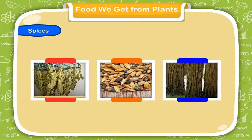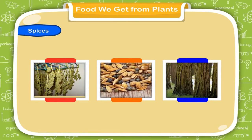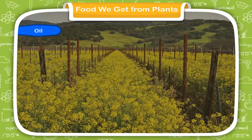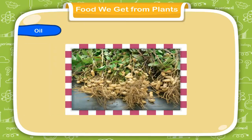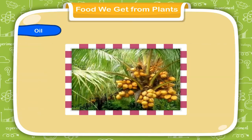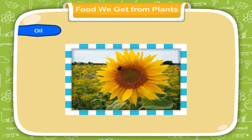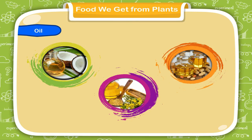These add flavor to our food and make it tasty. Oil. The seeds of some plants such as ground nut, mustard, coconut, sunflower, etc. give us oil. Oil is used as a medium for cooking.